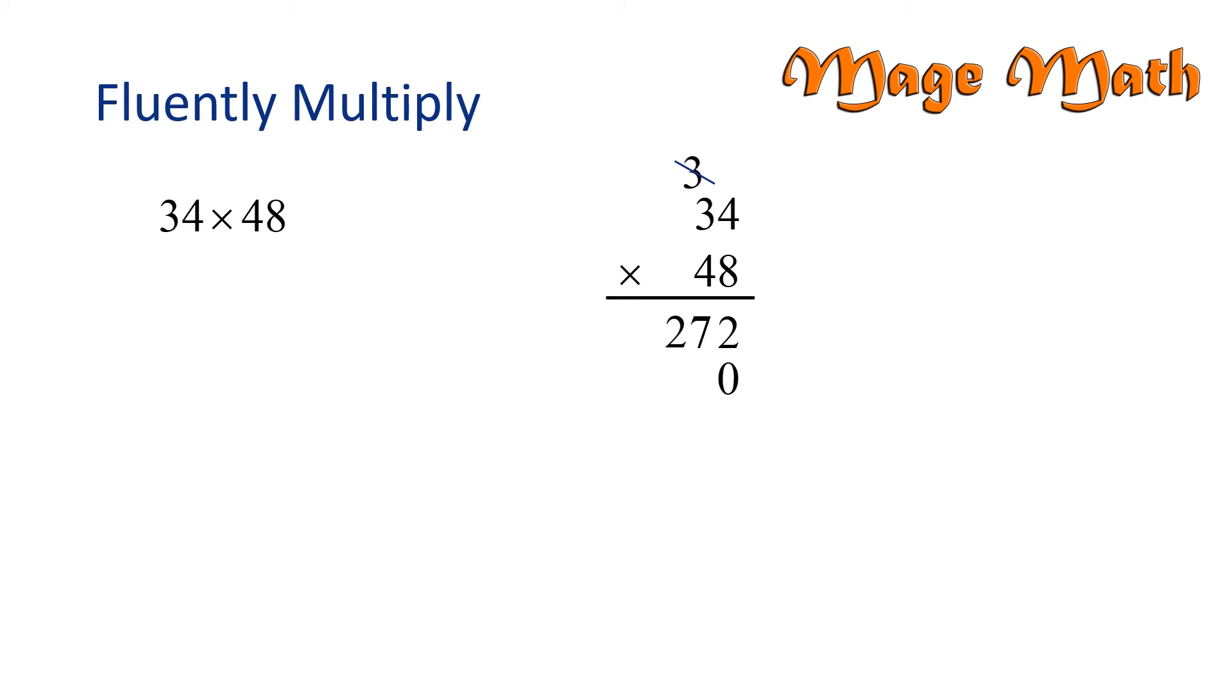Okay, let's multiply four times four, that's sixteen. So we'll carry the one, and then we multiply four times three, which is twelve, and then we add the one that we carried. Twelve plus one is thirteen.